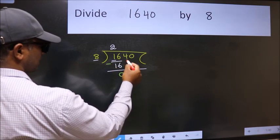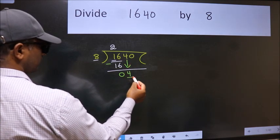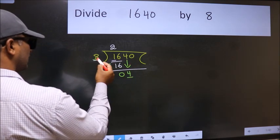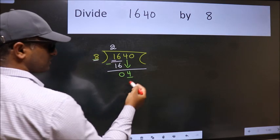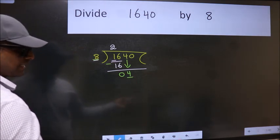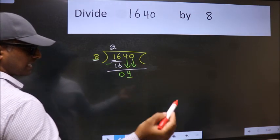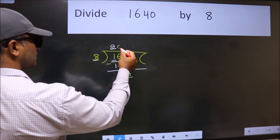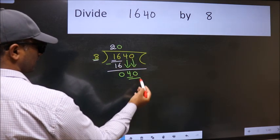After this bring down the beside number. So 4 down. Now here we have 4 and here 8. 4 is smaller than 8. So we should bring down the second number. And the rule to bring down the second number is put 0 here. Then only we can bring this number down. So 40.